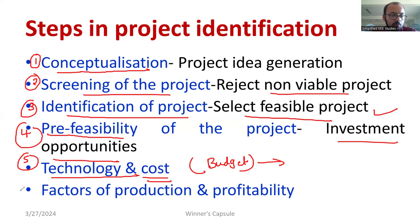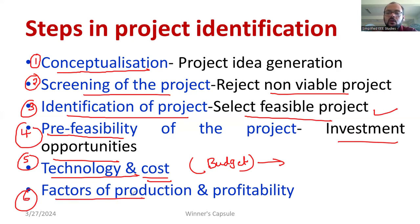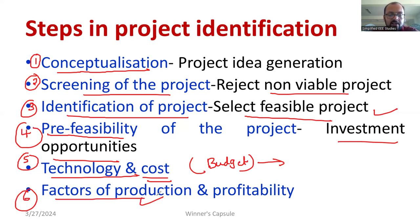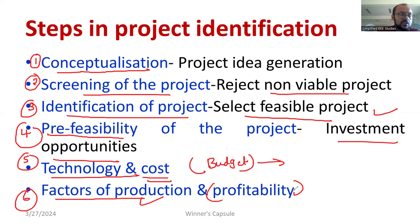The sixth step is factors of production and possibility. Whether good enough employees are available, whether sufficient land is available for manufacturing, and whether good enough transportation facilities are available — you have to consider all factors of production. Next is profitability: is there any scope for getting profit? Whether the business can be expanded, and future growth and expansion — everything you have to consider.